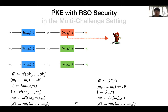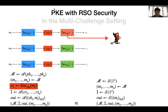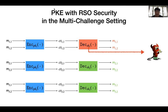Standard semantic security is not enough to imply RSO Security, and there are many works constructing public key encryption schemes with RSO Security. However, in all these works, they only consider a single-channel setting — that is, each public key can only be used to encrypt one message into one ciphertext. For standard semantic security, such single-channel security does imply the more realistic multi-channel security by a standard hybrid argument. But it is unknown if this equivalence still holds for RSO Security. In this work, we formally study PKE schemes with RSO Security in the multi-channel setting.